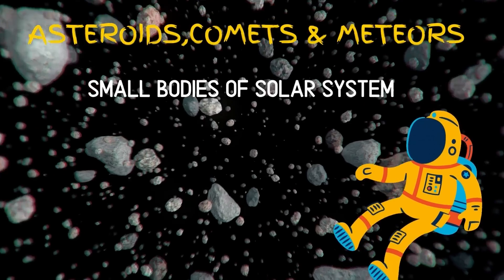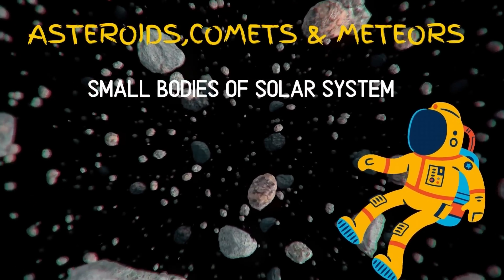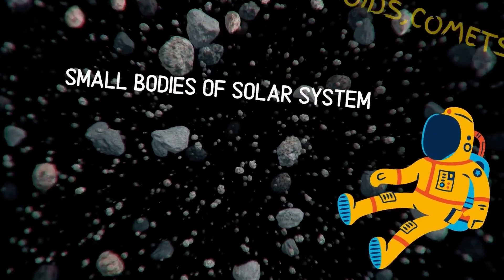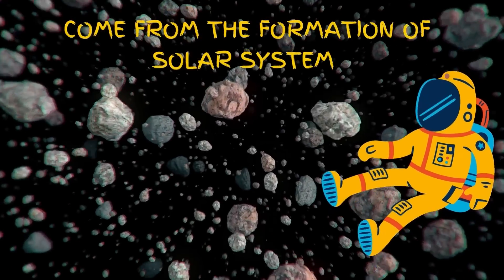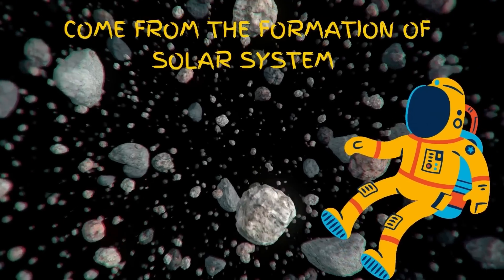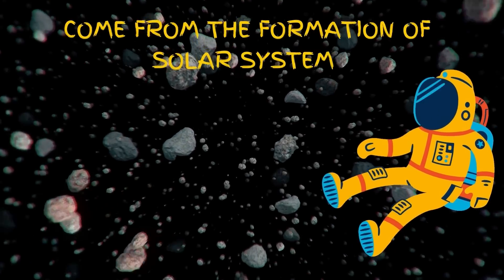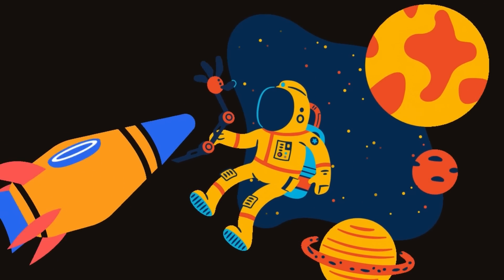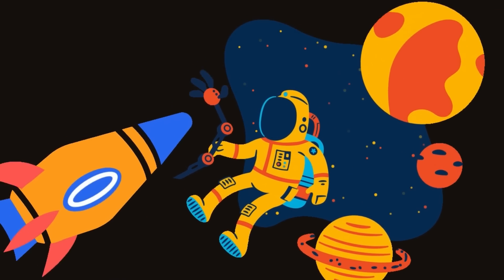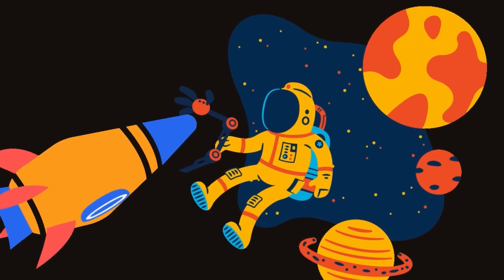Asteroids, comets, and meteoroids are the small bodies of the solar system. They come from the formation of the solar system as leftovers about 4.5 billion years ago. Now you know about the solar system. Keep learning about it.